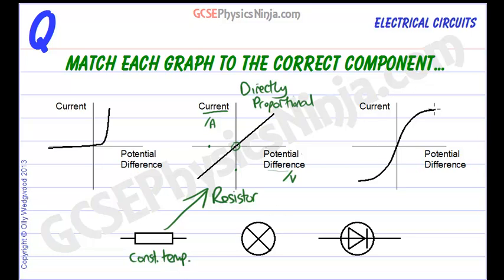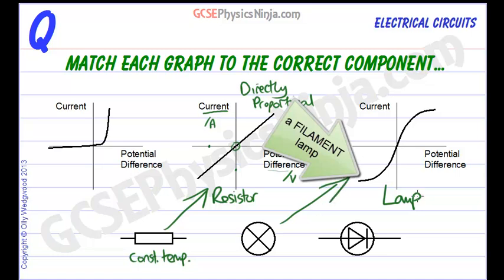Let's take a look at this curvy graph here, and this is the curve for a lamp. Why is it curvy? Well, as you increase the potential difference across the lamp, the filament gets hotter and hotter. And as the filament gets hotter, its resistance increases.